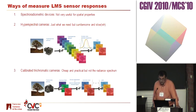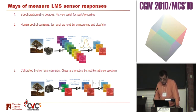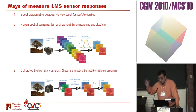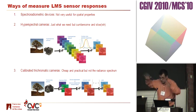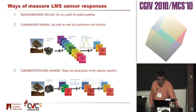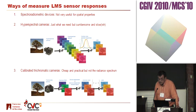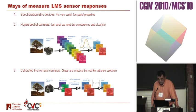There are several ways of measuring the LMS sensor responses. Of course, you can start with a spectroradiometric device and then do the transformation I mentioned before — they measure the spectroradiometric properties of a point, but they're not very useful for whole images. Then there are hyperspectral cameras, which do exactly what we need: they give you the whole spectroradiometric information for every pixel.